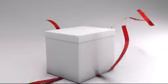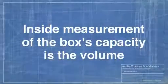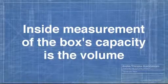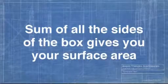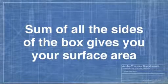It's important to know the difference between surface area and volume. One of the best ways to describe the difference is to think about wrapping a present in a box. To give someone a present, you need to think about the size of the box. How much space do you need inside the box to hold the present? The inside measurement — the box's capacity — is the volume. Then you have to wrap the present, so you need to figure out how much wrapping paper you'll need. That's a different calculation. To find out how much paper you need, you add up the sum of all the sides of the box, and that gives you your surface area.